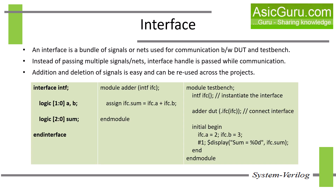Now let's understand what an interface is in SystemVerilog. An interface is a bundle of related signals or nets which are grouped together, and they are used for communication between the DUT and the test bench. So instead of passing multiple signals individually, we pass a single interface handle. This not only simplifies the connectivity but also improves readability and maintainability. Here we have an example of an interface: we are defining an interface named 'intf' which contains signals a, b and sum.